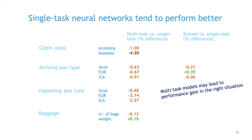Another question: you had like eight to ten models — at what point would you start with multitask learning? With two or three models, or does it depend? The speaker responds: it depends more on how difficult your problem is. It's easier to maintain ten linear regressions than ten neural networks, so problem complexity matters more than the number of targets. More importantly, it depends on how similar your targets are — as we saw with the arriving levels subset, closely related tasks work quite well together.